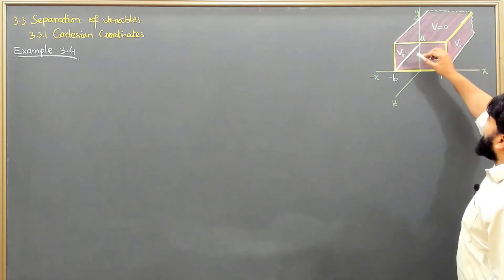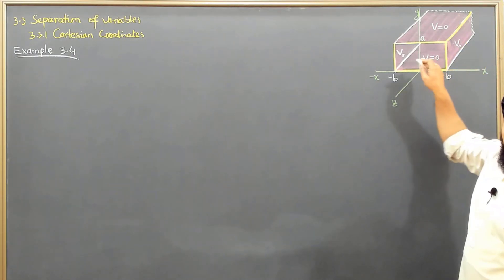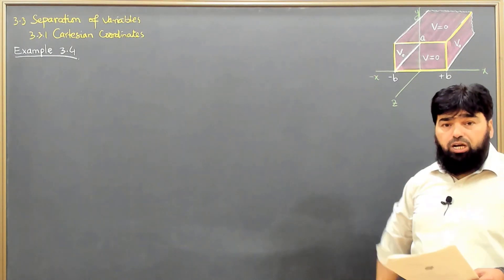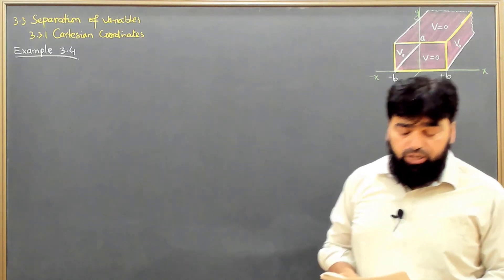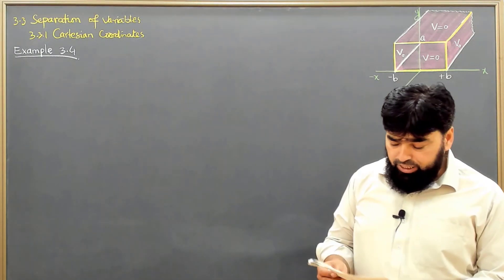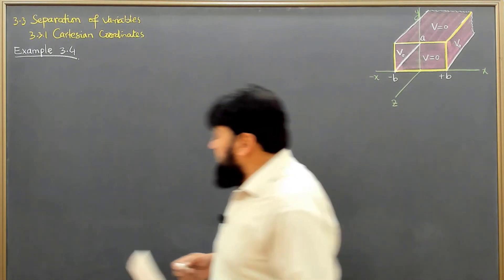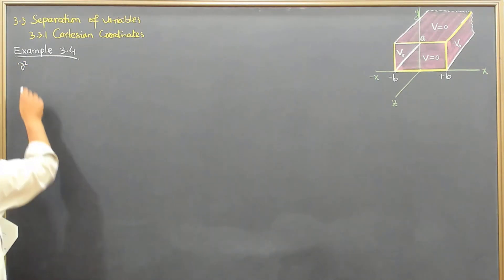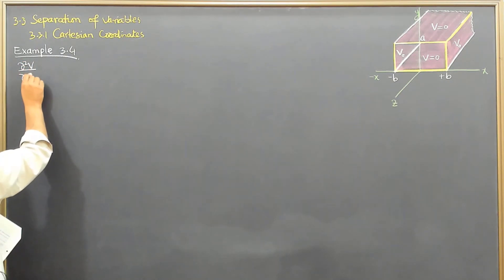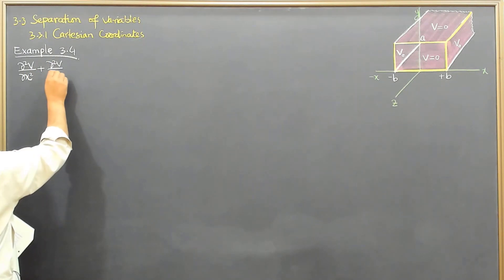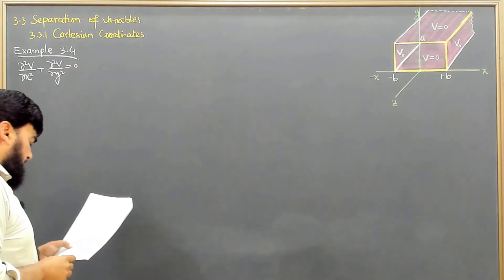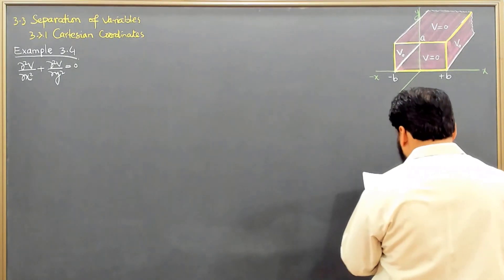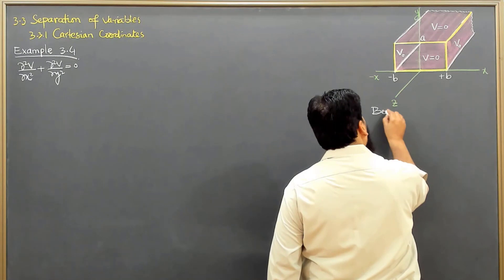We need to find the potential inside the resulting rectangular pipe. Above and below there are metal plates at zero potential, and on the sides we have metal strips at potential V₀. This is again a two-dimensional problem, and the two-dimensional Laplace equation is ∂²V/∂x² + ∂²V/∂y² = 0, with a set of boundary conditions.